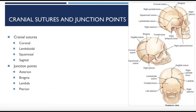The articulations of the cranium are called sutures. They are classified as fibrous, immovable joints, making them synarthrodial. The coronal suture separates the frontal bone from the two parietal bones. The sagittal suture separates the two parietal bones in the midline. The lambdoidal suture separates the two parietal bones from the occipital bone. The squamosal suture is formed by the inferior junctions of the two parietal bones with the temporal bone. Each end of the sagittal suture has a named point: the bregma is the anterior end and the lambda is the posterior end.